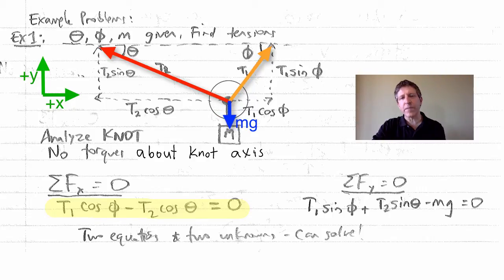And then all you need is an equation in the y direction. Notice that the forces are acting on this knot. Again, I've chosen the knot as the thing I'm going to analyze, what the forces are on. We've got the vertical component of T1, we've got the vertical component of T2, and we've got mg.